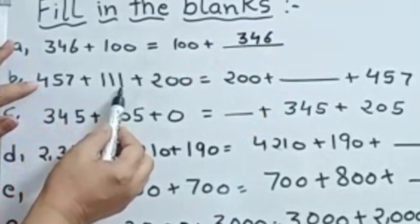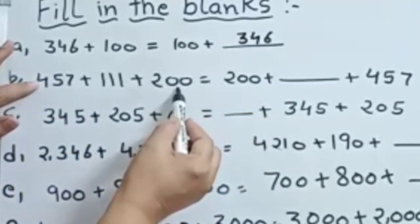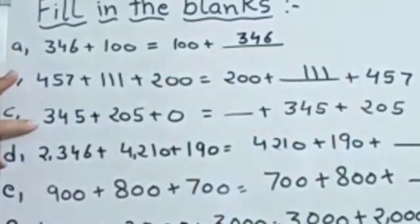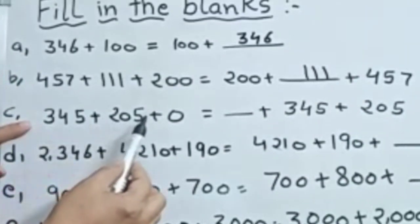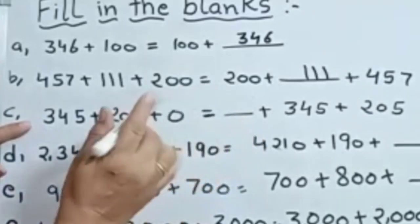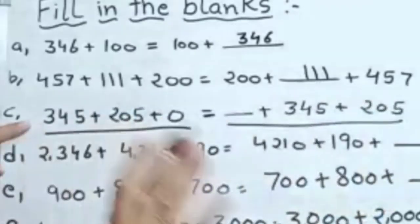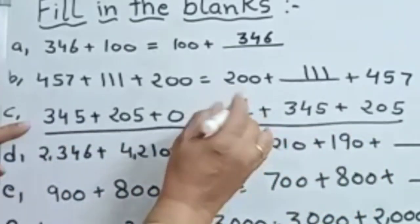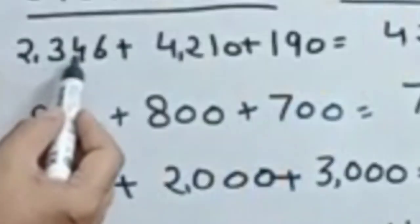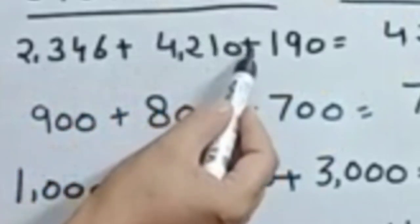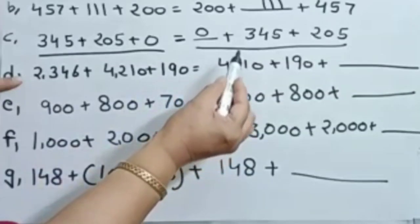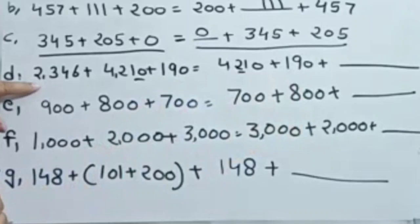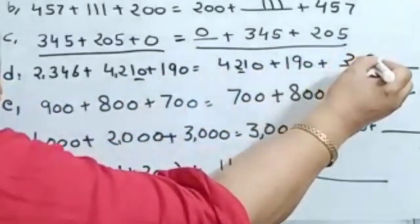457 plus 111 plus 200 equals blank plus 200 plus 457. Now 200 is here, 457 is here. Which number is missing? 111. Very easy. Next: 345 plus 205 plus 0 equals blank plus 345 plus 205. The number on the left side and right side are equal. Which number is missing? 0. Next: 2,346 plus 4,210 plus 190 — 4,210 is here, 190 is here. Which number is missing? 2,346.